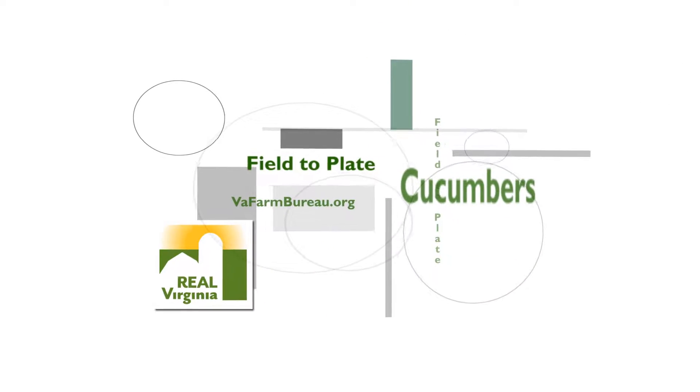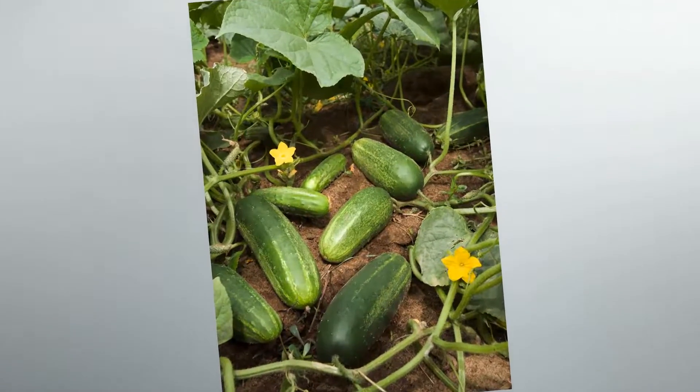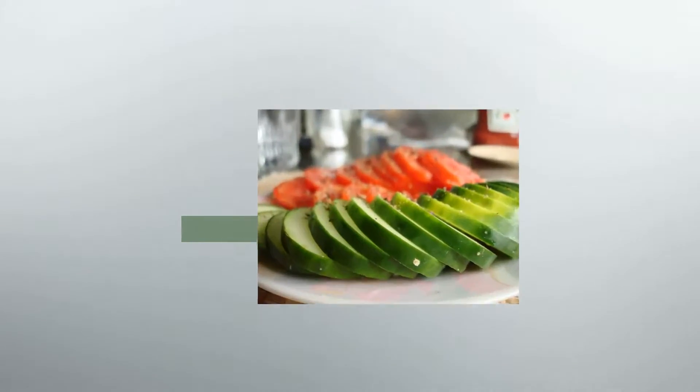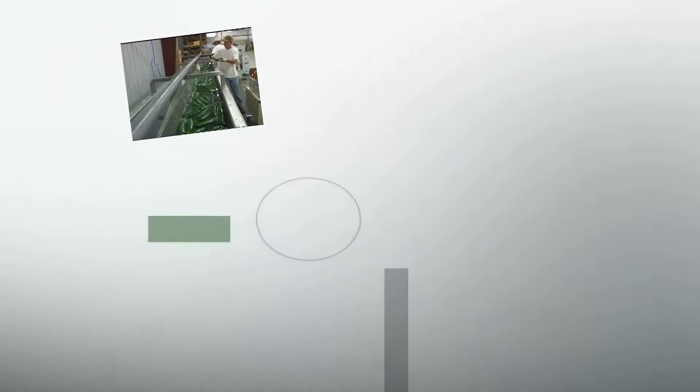Cucumbers are the third most popular vegetable raised in Virginia, behind tomatoes and sweet corn. Cucumbers are raised on 584 farms in the Old Dominion and almost all of them are sold fresh to consumers at farmers markets. The majority of these farms have less than an acre of cucumbers planted.